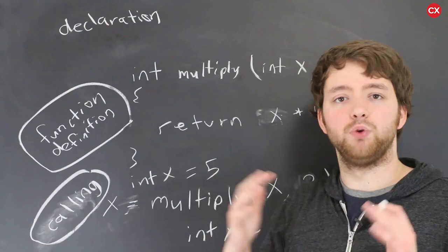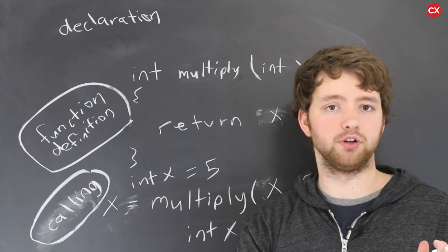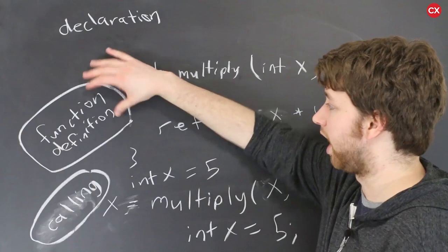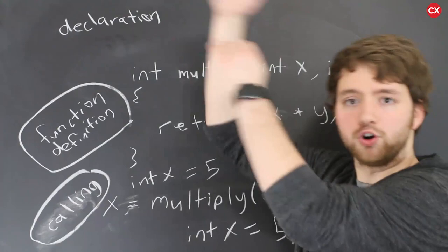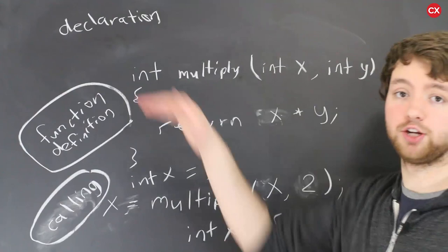Why am I even bringing this up though? If it's done automatically why does it matter? Well the thing is in C++ the declaration has to happen before you try to execute this function. So if I were to call multiply at some point in my code before the declaration it's not going to work. That means if we're going to rely on this function definition to do everything for us we need to put this code first before we call the function.